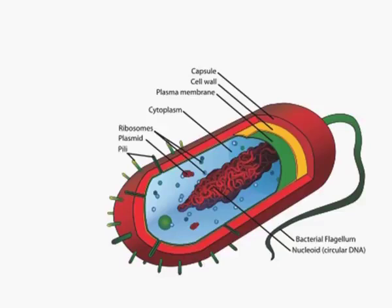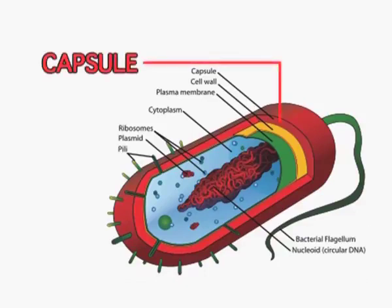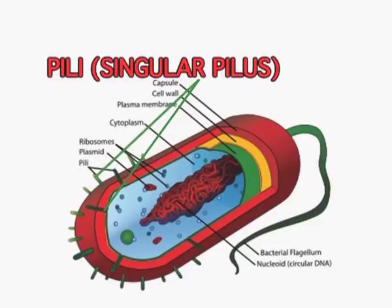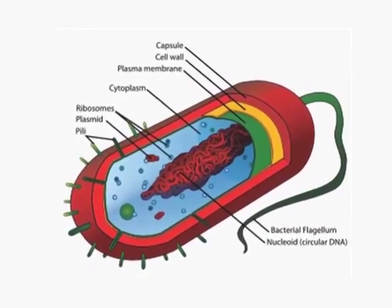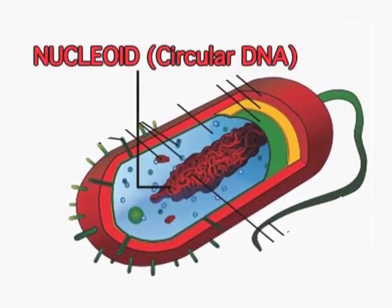In some bacteria, as you can see in the diagram, the cell is surrounded by yet another layer known as the capsule, but that is only in some bacteria. From the cell wall, certain thread-like structures are emerging out — these are known as pili, and they play an important role in joining two bacteria during reproduction. The cell membrane encloses the cytoplasm and other structures. A well-defined nucleus with a nuclear membrane is absent, so the DNA lies in the cytoplasm and is not enclosed by any membrane. The region where this DNA is present is known as the nucleoid.